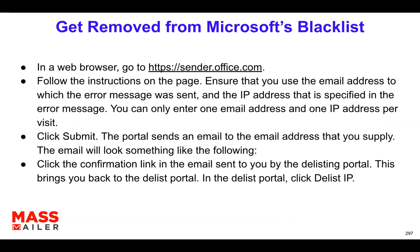And how do you actually remove any kind of blacklist by Microsoft? You just have to follow these steps. This is the link that you would go to: sender.office.com. That is Microsoft's portal where you can follow the instructions on the page to remove the IP address. You will have to validate or verify your domain email address. You can enter only one email address and one IP address per visit for this particular removal request.